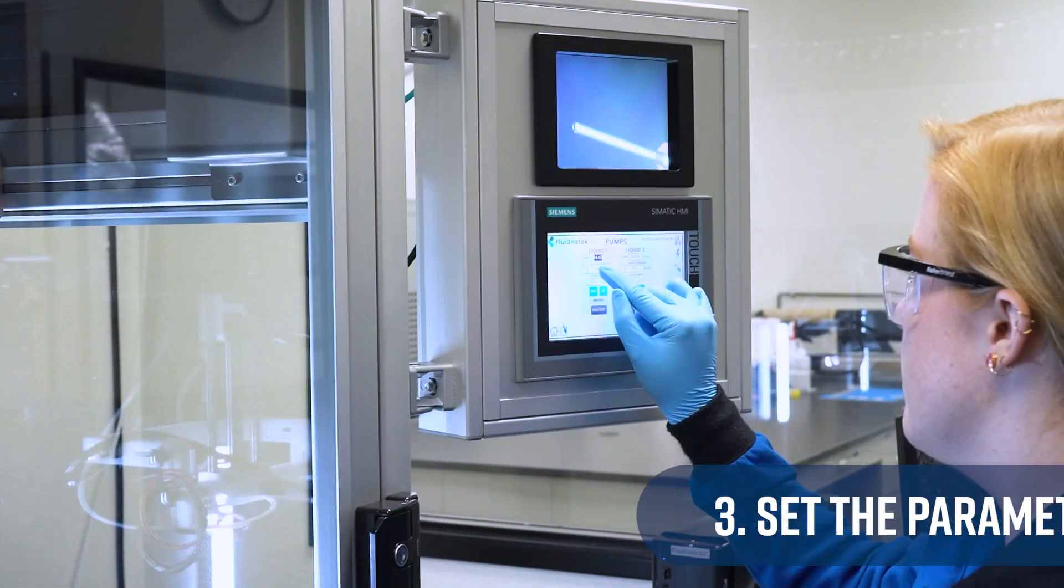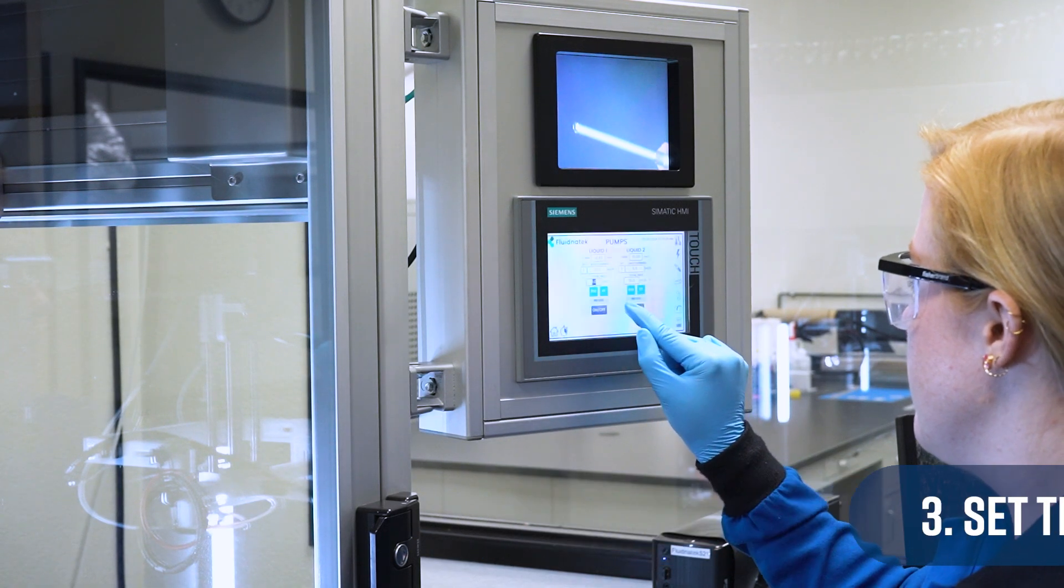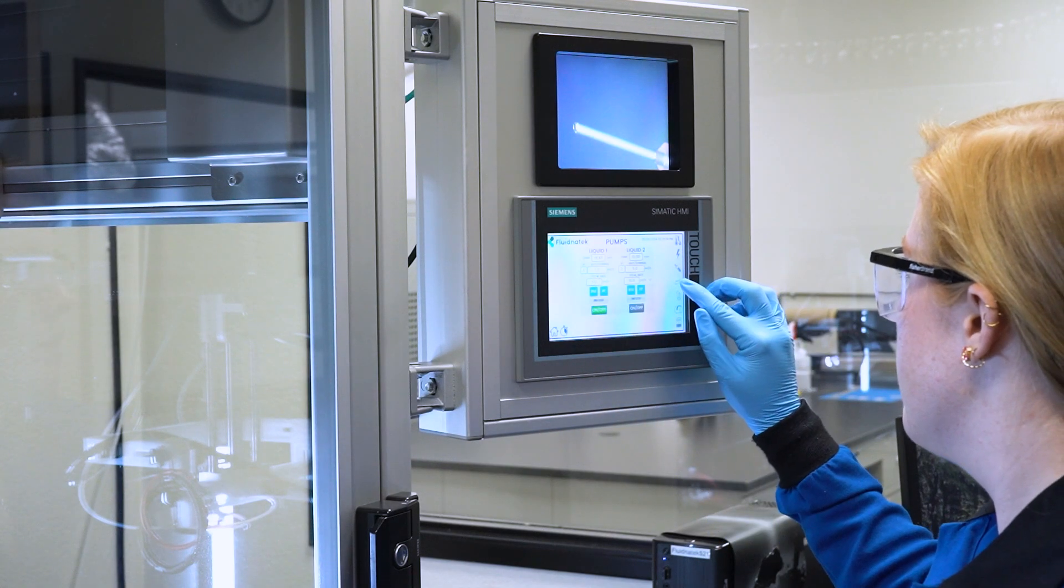Step three, set the parameters. Adjust the flow rate, needle to collector distance, and voltage on your high-power voltage supply. This can be done using the touch screen on the Fluidnatec systems.